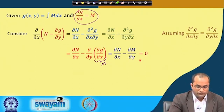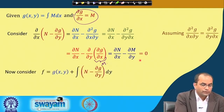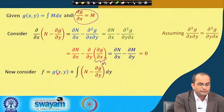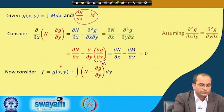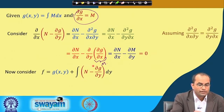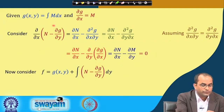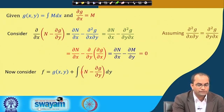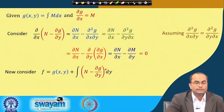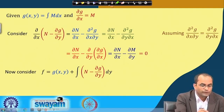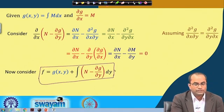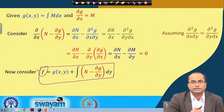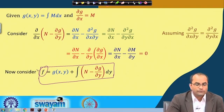With this, we can now construct f. We define f = g + ∫(N − ∂g/∂y) dy, where g = ∫M dx and the integrand is a function of y alone. We will prove on the next slide that the differential of this f equals M dx + N dy.